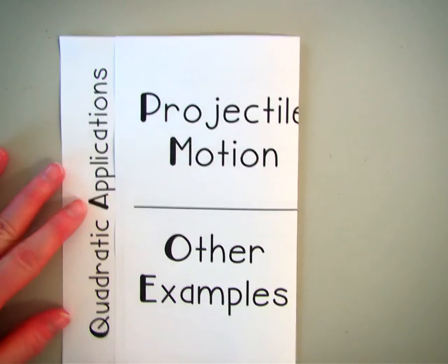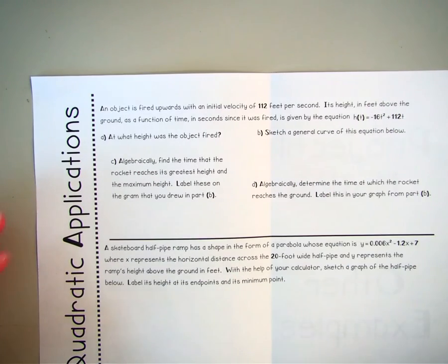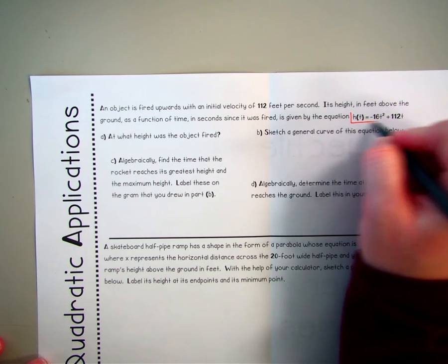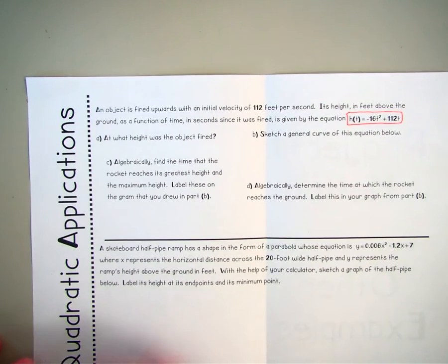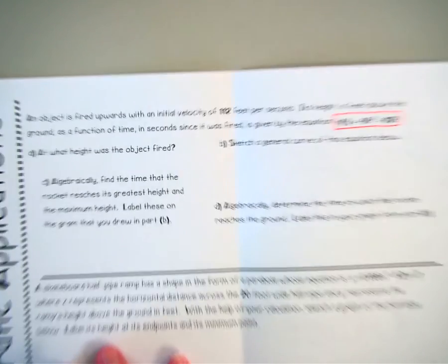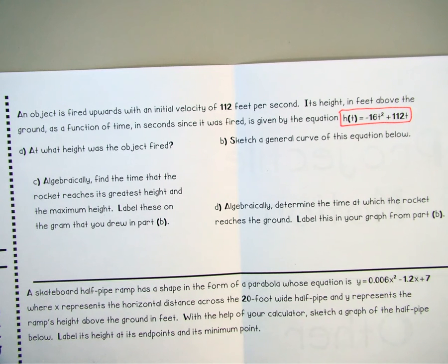So let's take a look at the couple examples that I gave you. So here, first one, we have an object is fired upwards with an initial velocity of 112 feet per second. Its height in feet above the ground as a function of time in seconds since it was fired is given by this equation here. This is nice. We don't have to create the equation. They already gave the equation to us. So a little less work on our part. So always be thankful when they give you that.